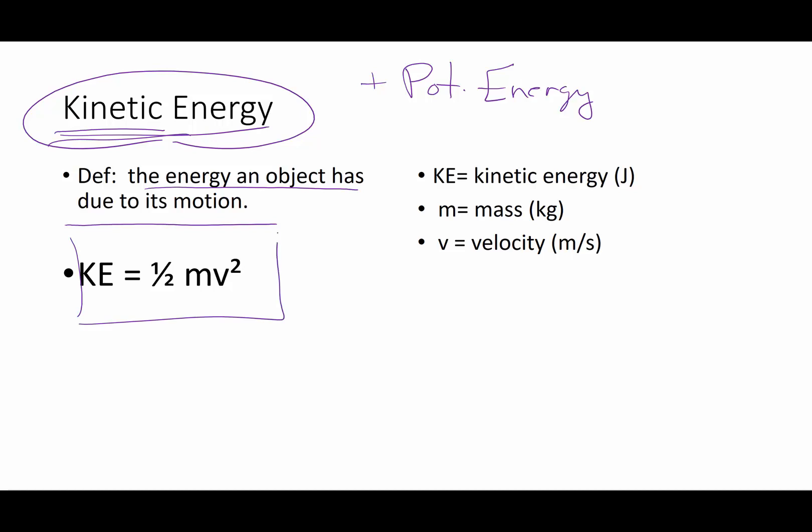And so kinetic energy is the energy an object has due to its motion. The equation for kinetic energy is this: kinetic energy is one-half mass velocity squared. Kinetic energy is measured in joules, mass in kilograms, and velocity, our old friend meters per second.